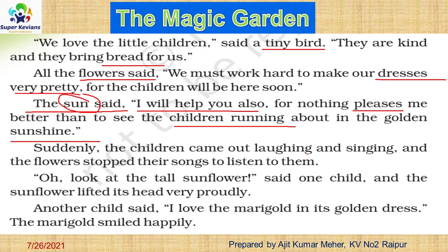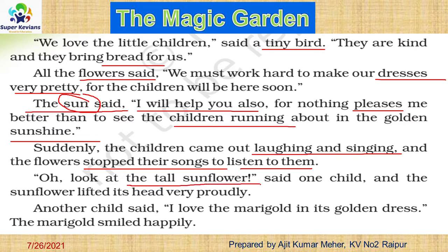Suddenly, the children came out laughing and singing, and the flowers stopped their songs to listen to them. The children entered the garden and the flowers stopped talking to listen. One child said, 'Oh, look at the tall sunflower!' and the sunflower lifted its head very proudly. The child appreciated the sunflower and it was so happy. Another child said, 'I love the marigold in its golden dress,' and the marigold also smiled happily.